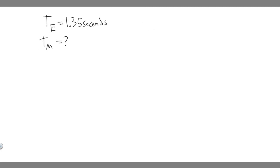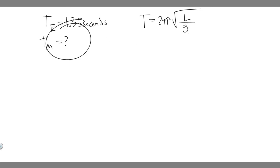To solve this, you should know the formula for the period: T equals 2π times the square root of the length of the pendulum divided by G, where G is gravity. The gravity is going to be different on each of these planets. We know that gravity on Mars is 0.37 that on Earth.